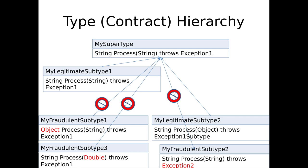How about fraudulent subtype 1? Process takes a string but returns an object. Could someone who calls this be disappointed if all they know is it's an instance of the supertype? Yes — they're expecting back a string and they get an object. 'I don't know what to do with this — it's some wacky integer, hash set, or dictionary or splay tree.' Could they also be disappointed if the method requires a double instead of a string? Yes, because all they know is it's the supertype.